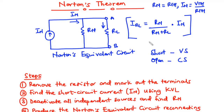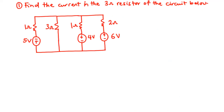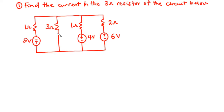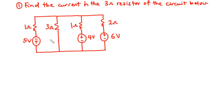Now let's move on and solve a couple of examples. Example one: find the current in the 3-ohm resistor of the circuit. We are going to find the current using Norton's theorem. The first thing we need to do is remove the 3-ohm resistor, mark out the terminals A and B, and replace the resistor with a short circuit to find the short circuit current IN.